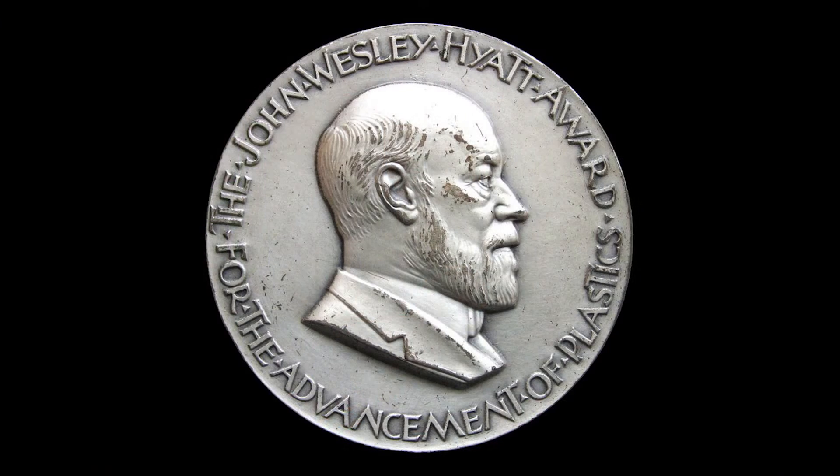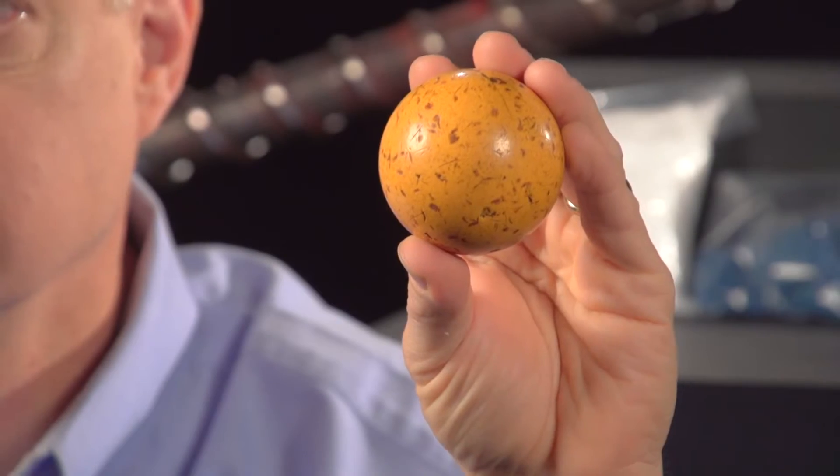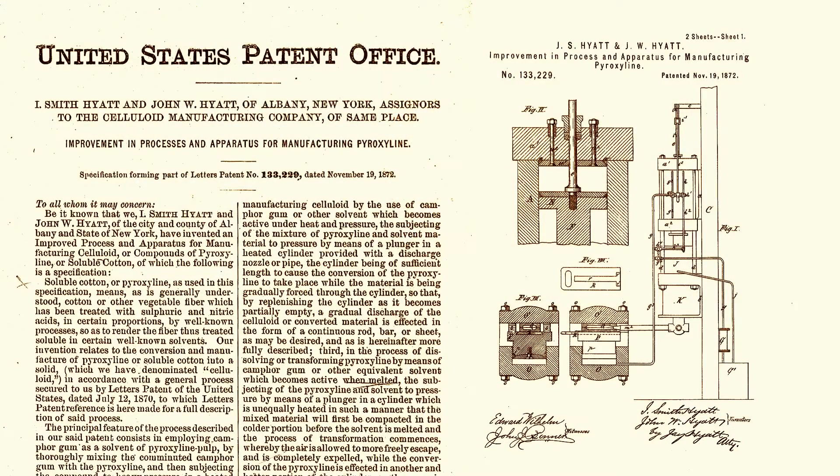This spurred John Wesley Hyatt to develop one of the first plastics, celluloid, to create billiard balls. He patented an apparatus for molding products from celluloid. This apparatus was the birth of plastic injection molding.